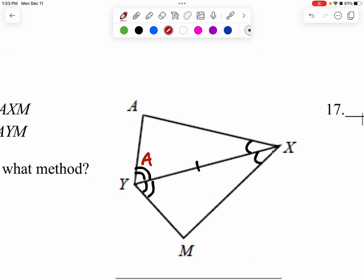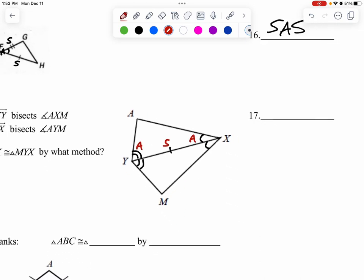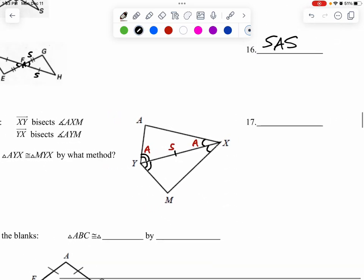We have angle, side, angle. Here's an A, here's an S, here's an A. Angle, side, angle. So that is why I have ASA for this one.